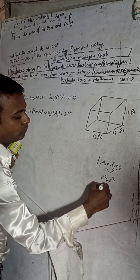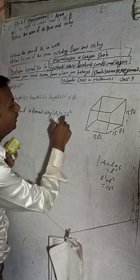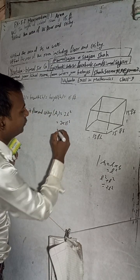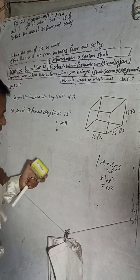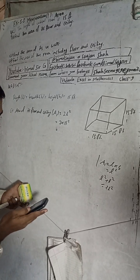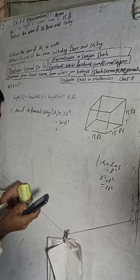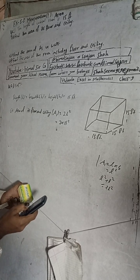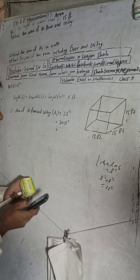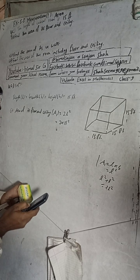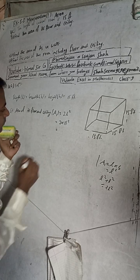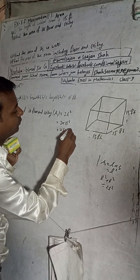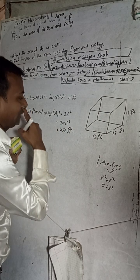So this is 2 into L squared. The length is 15, so 15 squared is 225, and 225 into 2 equals 450. Therefore A1, the area of floor and ceiling, is 450 square feet.